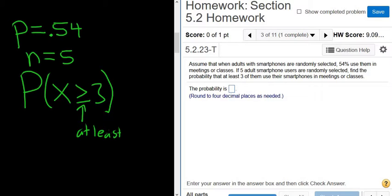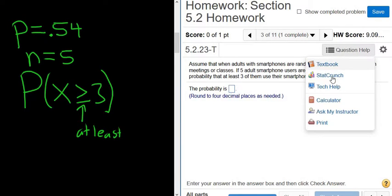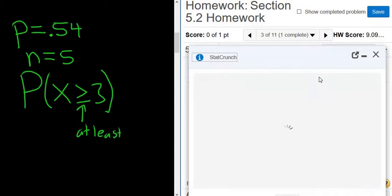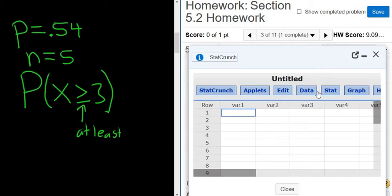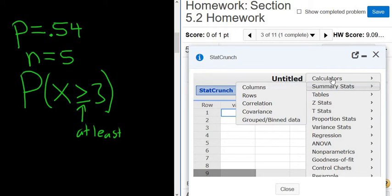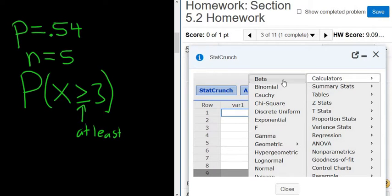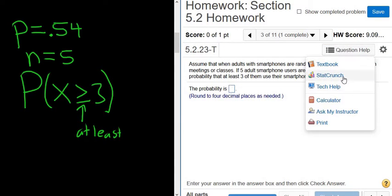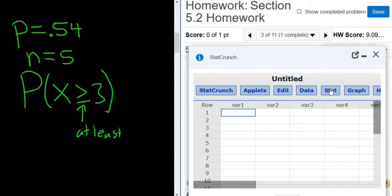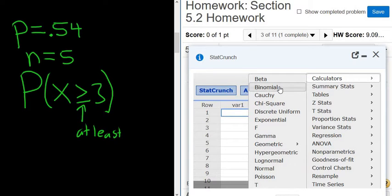Now we just go to StatCrunch and type in the numbers. You click on question help, and you go to where it says StatCrunch. Then it's Stat, Calculators, Binomial.